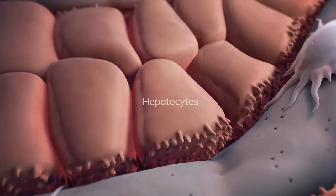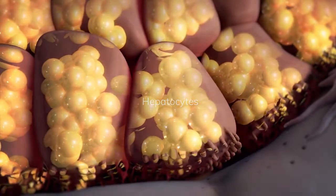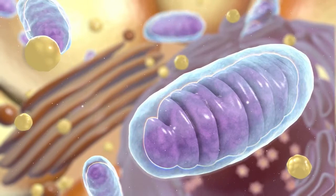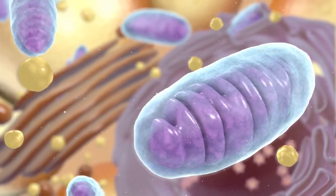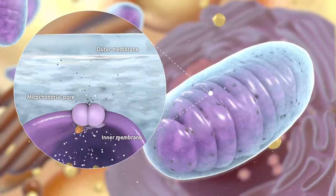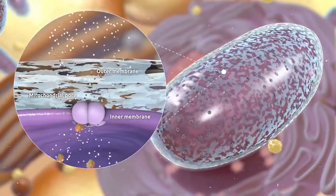In NASH, fat collects in liver cells called hepatocytes. The fat build-up puts stress on mitochondria, the cell's energy producers. This can cause formation of mitochondrial membrane pores which may cause the mitochondria to swell and rupture.